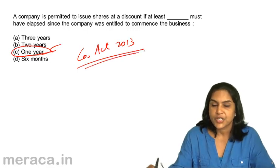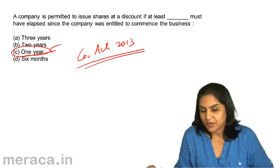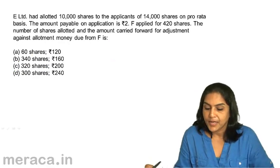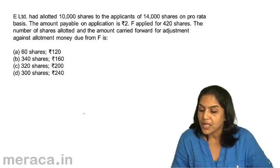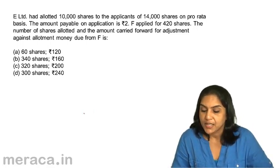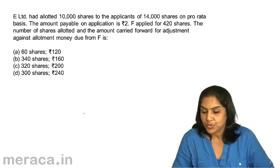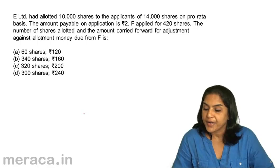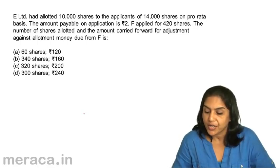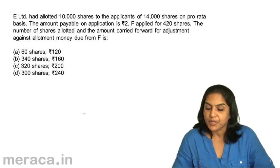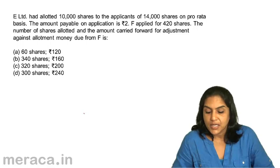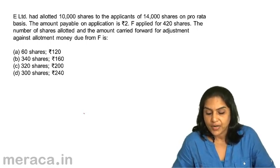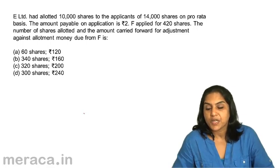E Limited allotted 10,000 shares to the applicants of 14,000 shares on a pro-rata basis. The amount payable on application is Rs. 2. F applied for 420 shares. The number of shares allotted and the amount carried forward for adjustment against allotment money due from F is: A) 60 shares and Rs. 120, B) 340 shares and Rs. 160, C) 320 shares and Rs. 200, D) 300 shares and Rs. 240.